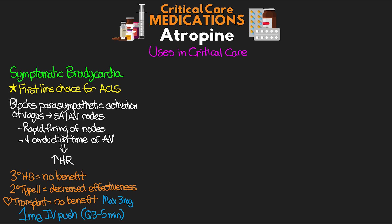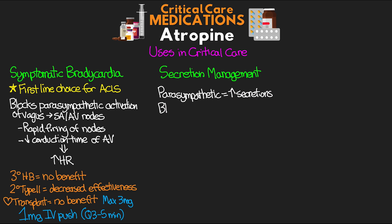Another potential benefit of atropine is secretion management. Parasympathetic activation leads to increased secretion production, so blocking this can help decrease secretions. While its use for this is not very common — because typically we try something like glycopyrrolate first — atropine can be an effective alternative, especially in end-of-life patients. The dose used here is 0.5 to 1mg, and we can repeat this every 1 to 2 hours.